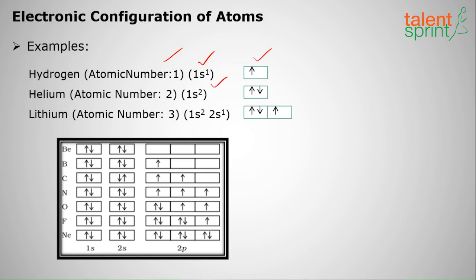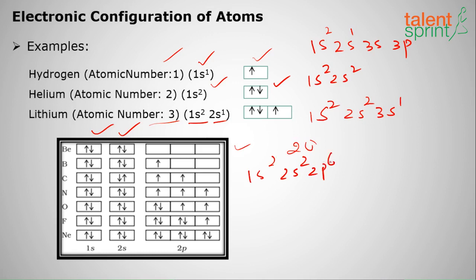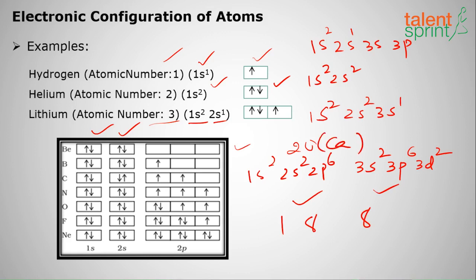Helium has atomic number 2, so it has 2 electrons — 1s². The two electrons spin in opposite directions. Lithium has atomic number 3, so it is 1s² 2s¹. Beryllium is 1s² 2s². Boron is 1s² 2s² 2p¹. For calcium with atomic number 20, the configuration is: 1s² 2s² 2p⁶ 3s² 3p⁶ 4s² — giving 2, 8, 8, 2 electrons filled in order.